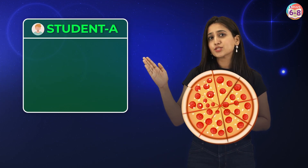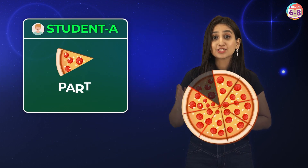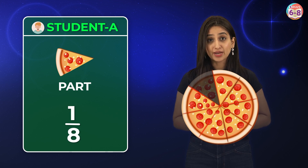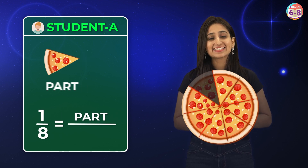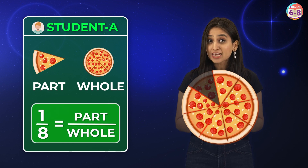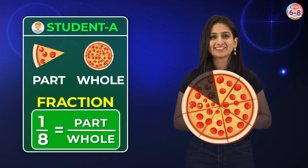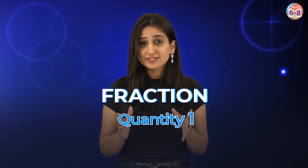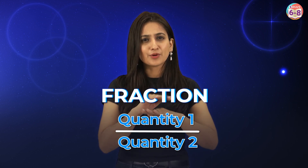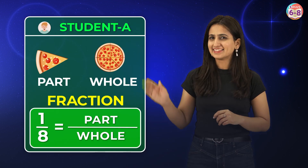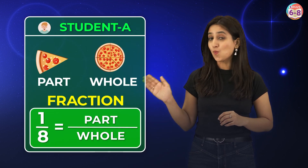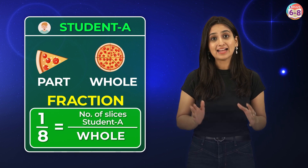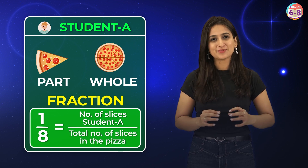If student A takes one slice of pizza, which is a part or a fraction of the whole pizza, we can represent it as 1 by 8, wherein 1 is the part of the pizza and 8 is the whole of the pizza. This type of representation is called a fraction. A fraction represents a part of a whole. It's expressed as one quantity divided by another quantity separated by a horizontal division line. In this case, the fraction 1 by 8 — the numerator 1 represents the number of slices student A got, and the denominator 8 represents the total number of slices in the pizza.